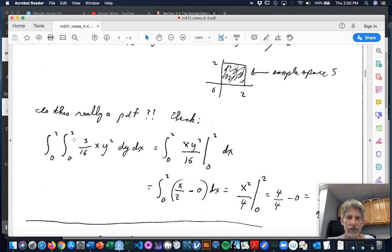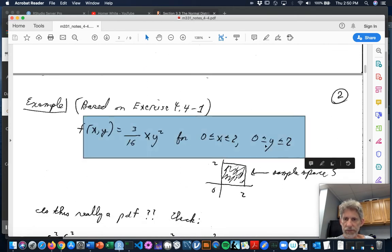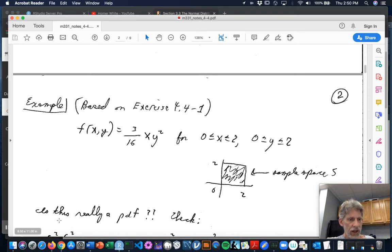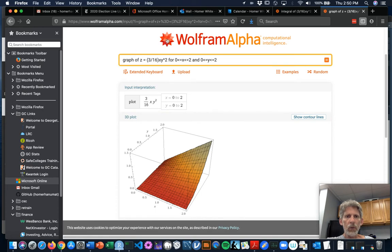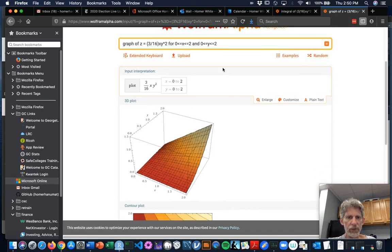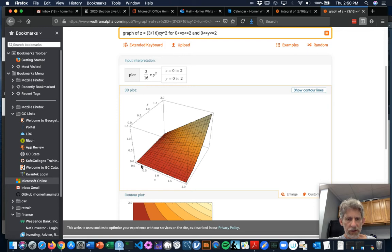I'm going to go and look at a graph of this as a surface. So I went to the web, and I actually went to Wolfram Alpha. Like if you just Google Wolfram Alpha right here, you'll come to this great free computational service that tries to compute math for you. And you can enter like all kinds of stuff in ordinary language, and it's really smart at figuring out what you want. So I entered graph of z equals 3 over 16 times xy to the second power for x between 0 and 2 and y between 0 and 2. And it like thought for a moment, and it gave me the graph. You know, here's the positive x-axis. Here's the positive y-axis.